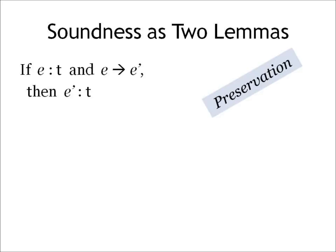Now soundness is usually proven as a pair of lemmas. The first one says that if E has some type T and E takes a step of execution, then the new program is also going to have type T. This is called preservation, meaning that the type of the program is preserved during execution.